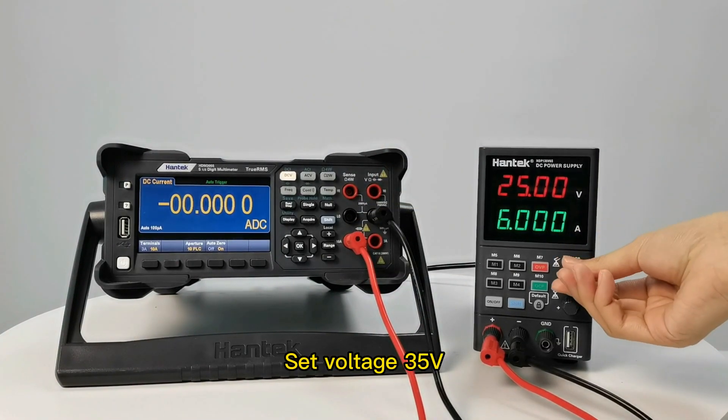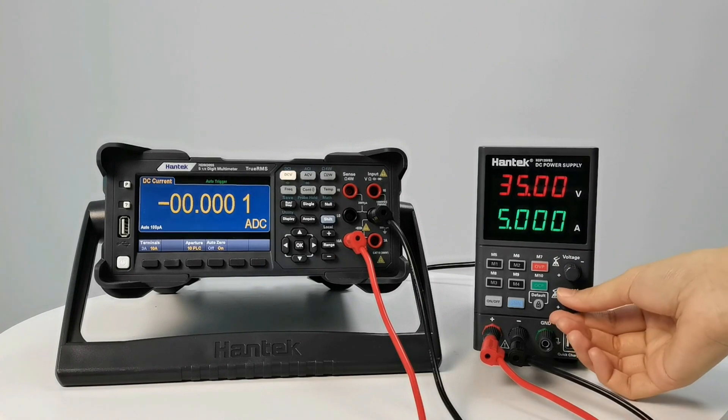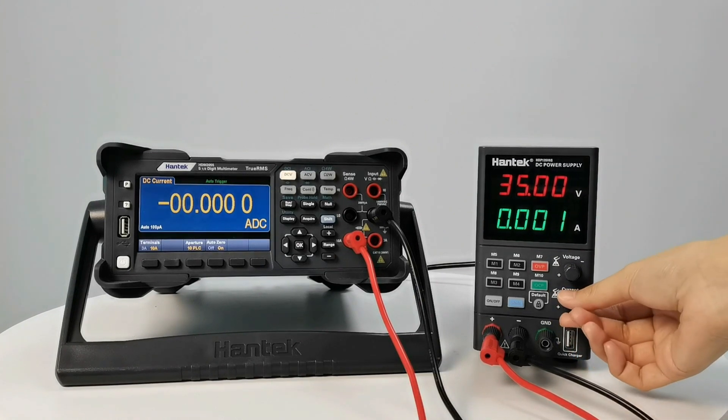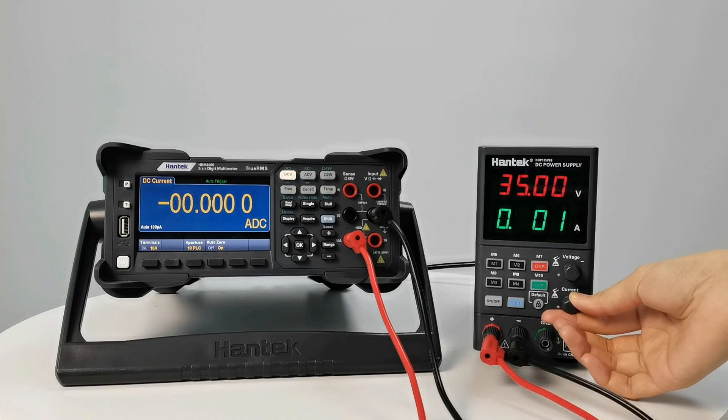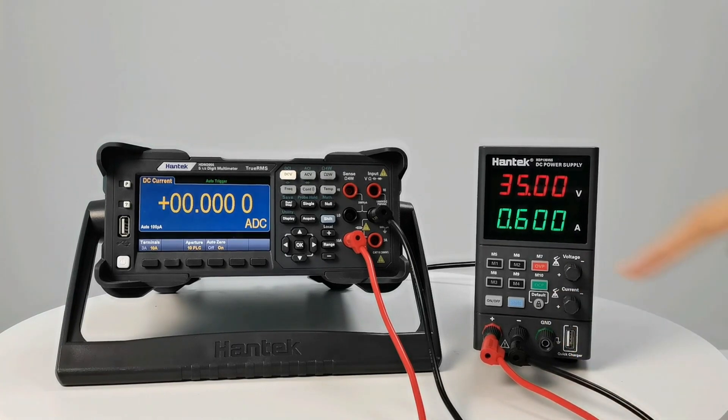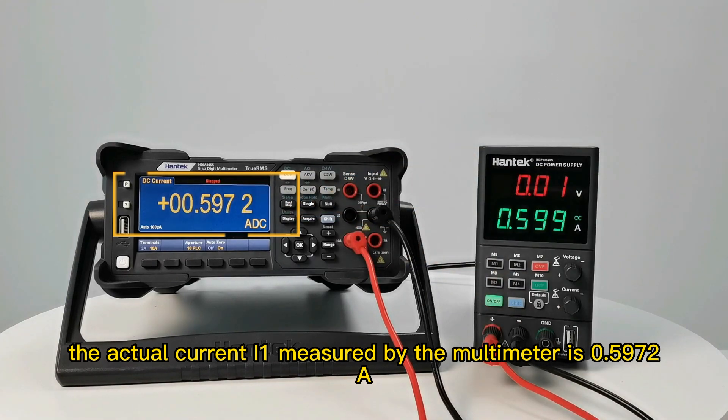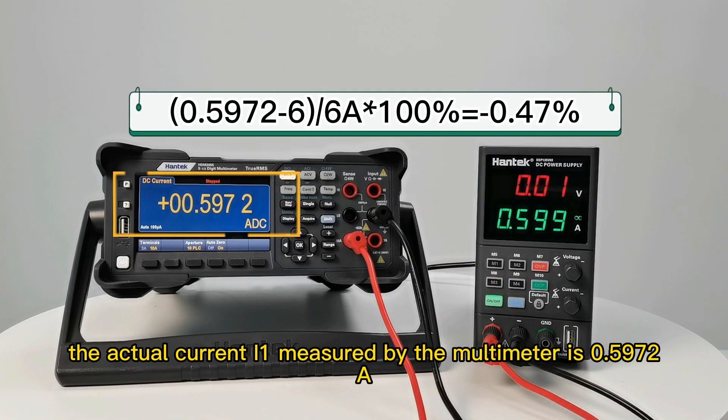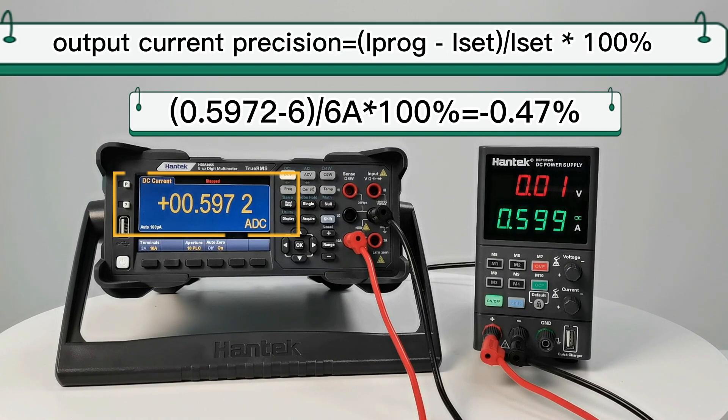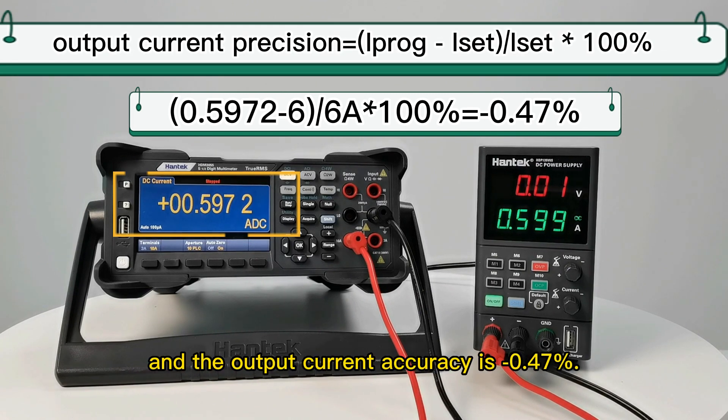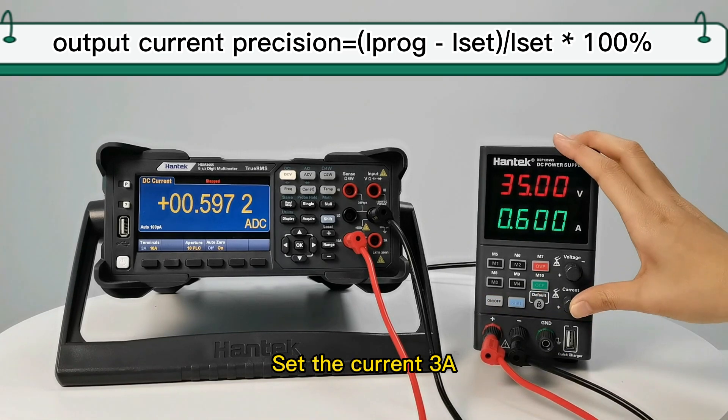Set voltage to 35V and current to 0.6A. The actual current I1 measured by the multimeter is 0.5972A, which is brought into the formula. The output current accuracy is -0.47%. Set the current to 3A.